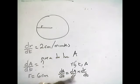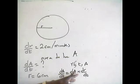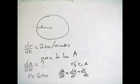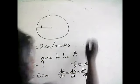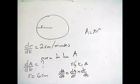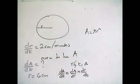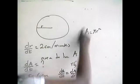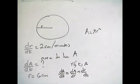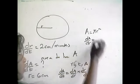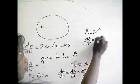We can find dA/dR. It's just a matter of finding the formula for the area of a circle. Since we're talking about a circle, the area is given by A = πR². So we have two variables, A and R, and we can differentiate. So dA over dR equals 2πR.